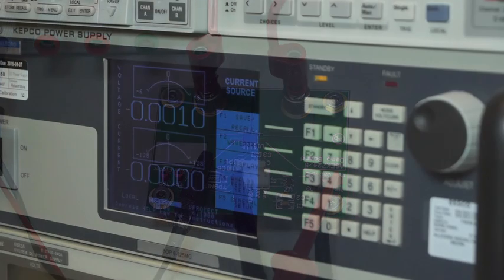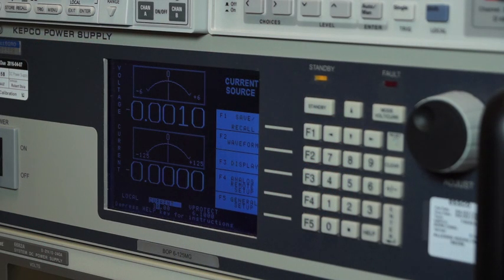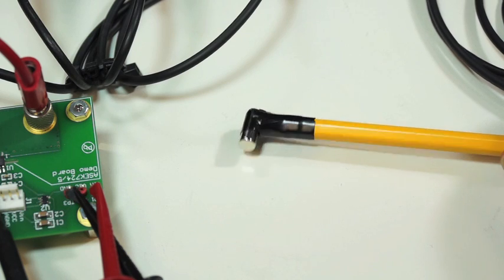I'll now turn on this power supply which will put 10 amps through both sensors and now move this high strength magnet towards each sensor.